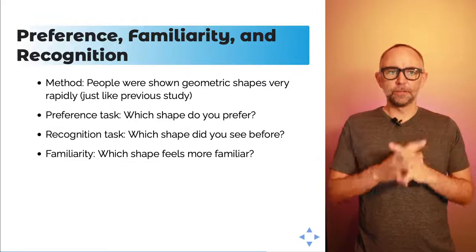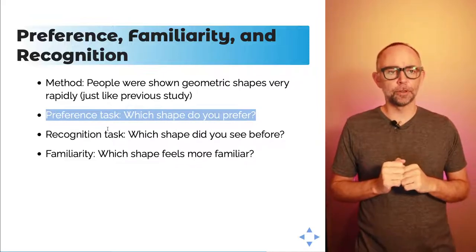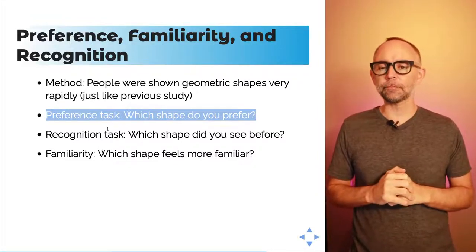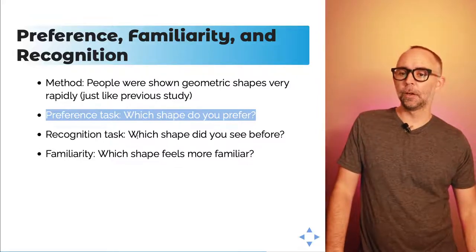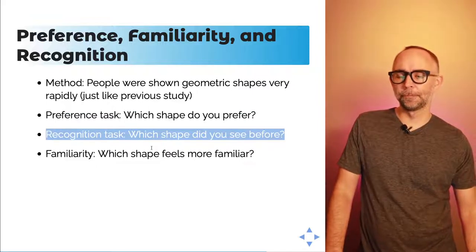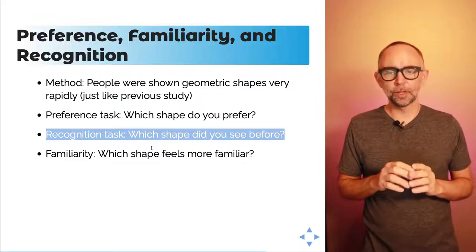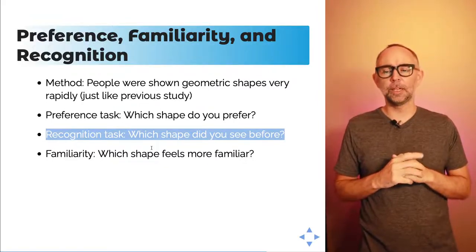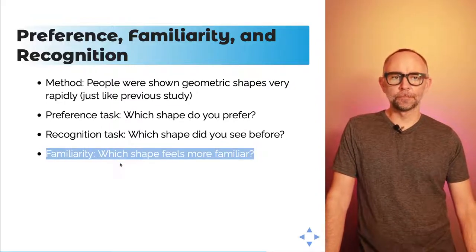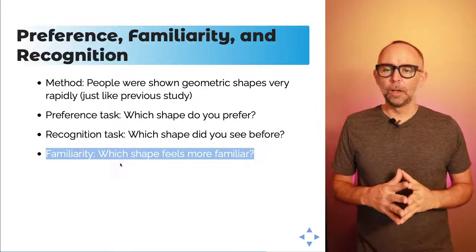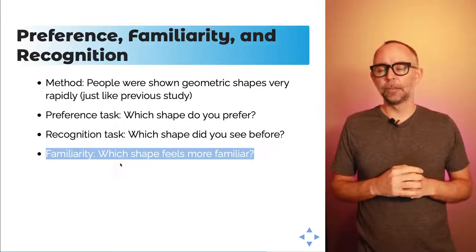Just like previous studies, you see a bunch of geometric shapes very quickly. After that you could be given a preference task — shown two shapes, say which one you prefer, one old and one new — and we already know people tend to prefer the one they saw before. They also gave a recognition task, where you have to say which shape was shown in the rapid stream — and we already know people aren't very good at that; they're at chance. These researchers added a third question: which one feels more familiar to you?